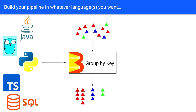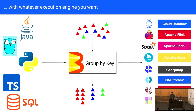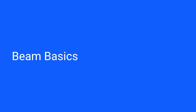Beam also introduced a couple other constructs: you can build your pipeline in whatever language you want, and importantly — and this is pretty unique to Beam — you can run with whatever execution engine you want. Beam can run on top of Spark, Flink, Google Cloud Dataflow, and a bunch of other engines. That's a brief overview of the history of Beam, and now I'll give an idea of how you can use it.